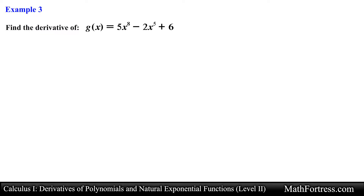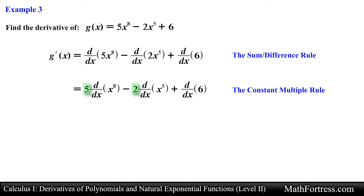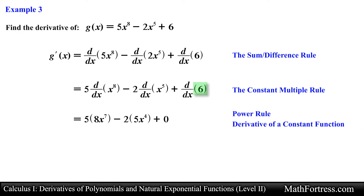Find the derivative of g = 5x⁸ − 2x⁵ + 6. In this example we have a trinomial with three terms separated by addition and subtraction operators. We apply a combination of the Sum and Difference Rule, taking derivatives of each term separately. The first and second terms require the Constant Multiple Rule, and then the Power Rule for the power functions of degree 8 and 5 respectively. The last term is a constant, so its derivative is 0. The final derivative is 40x⁷ − 10x⁴.